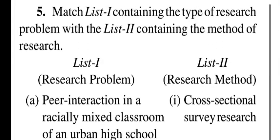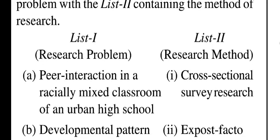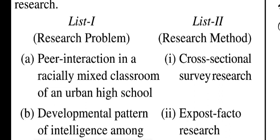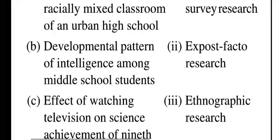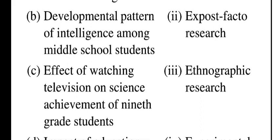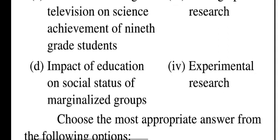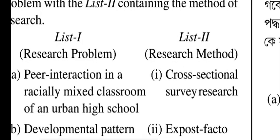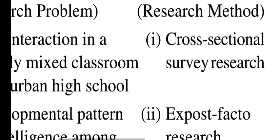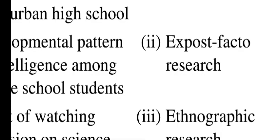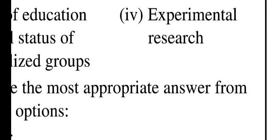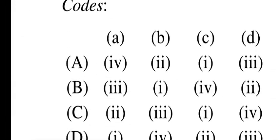Question five is a match-the-following. List one contains types of research problems: peer interaction in a racially mixed classroom of an urban high school; developmental pattern of intelligence among middle school students; effect of watching television on science achievement of 9th grade students; impact of education on social status of marginalized groups. List two contains research methods: cross-sectional survey research, ex-post facto research, ethnographic research, experimental research.